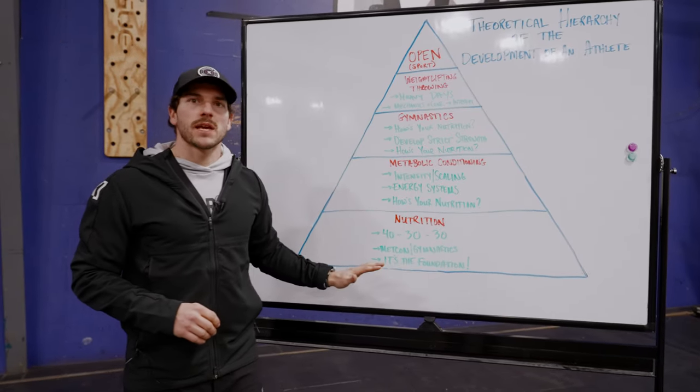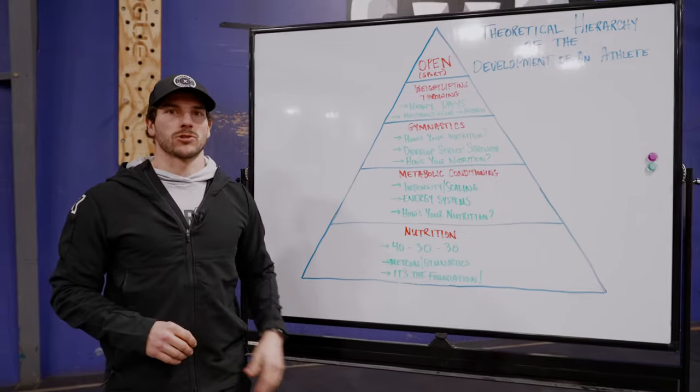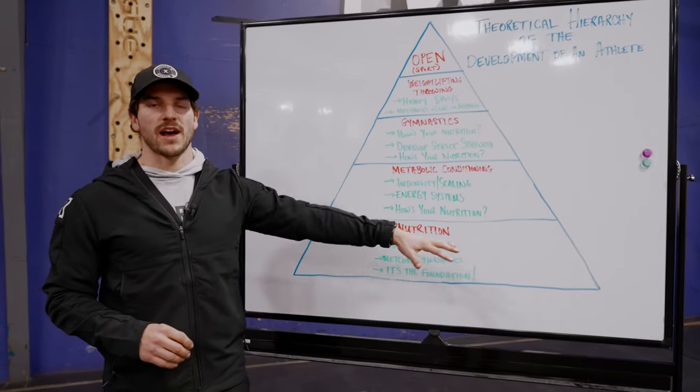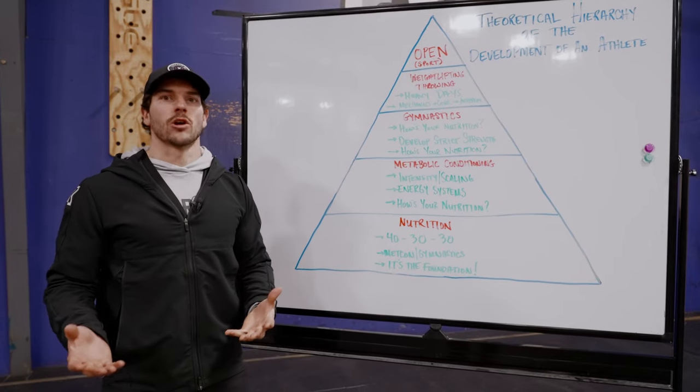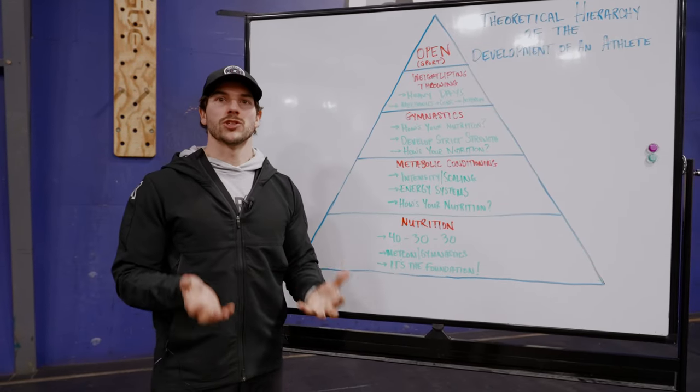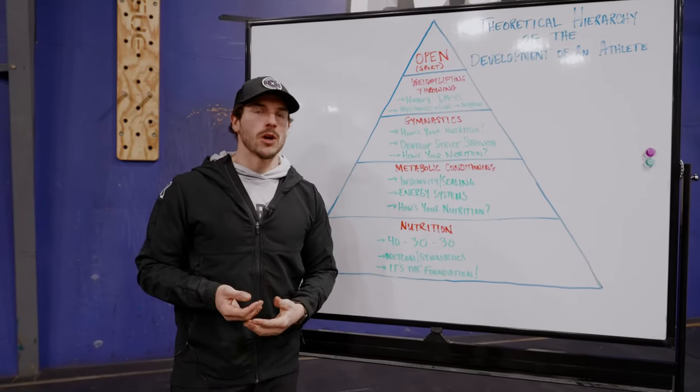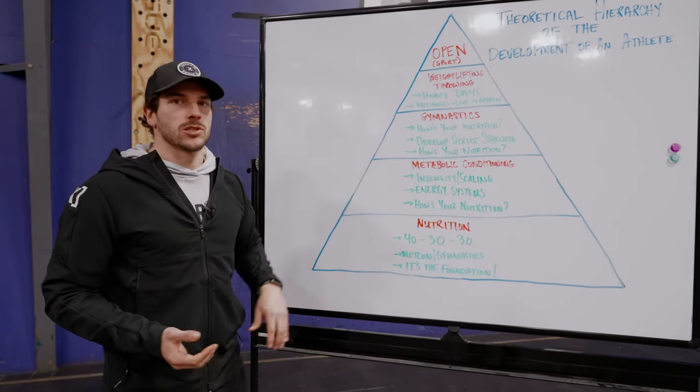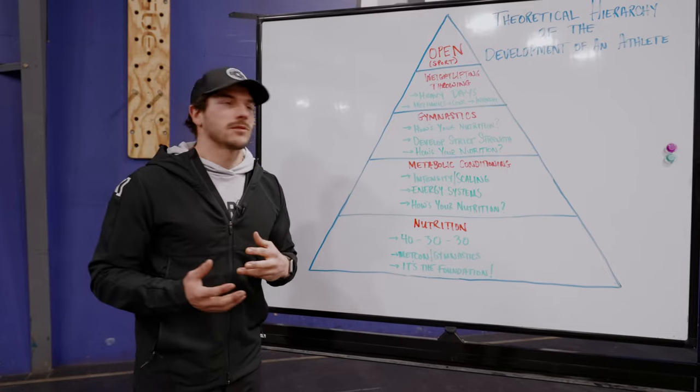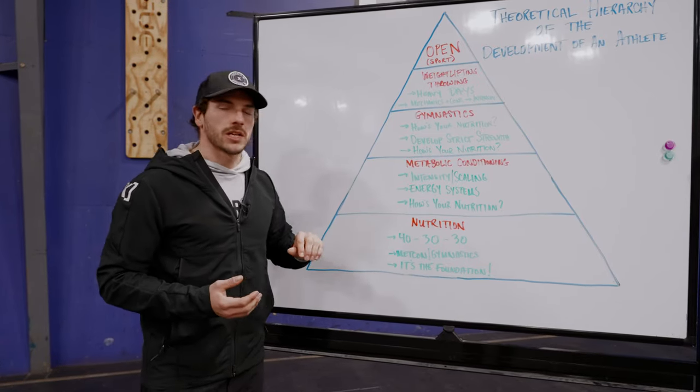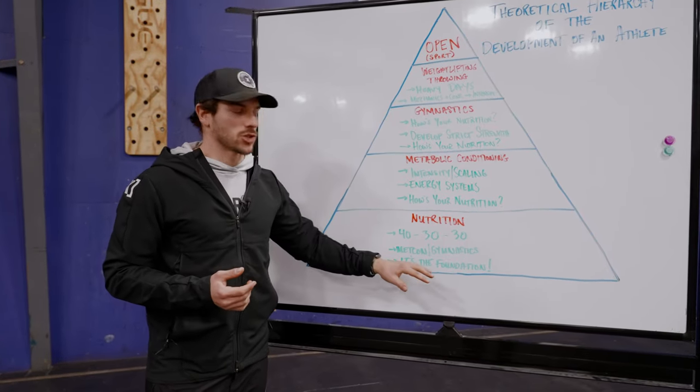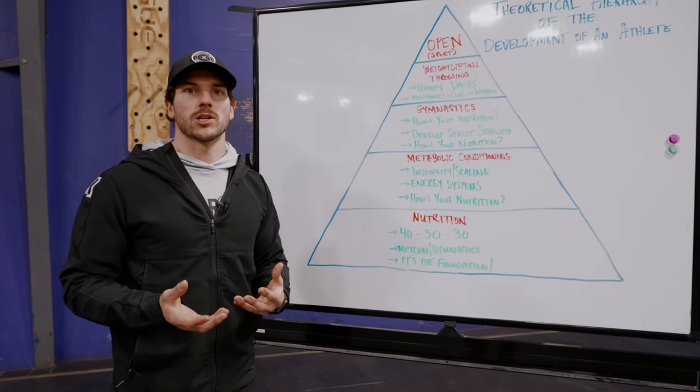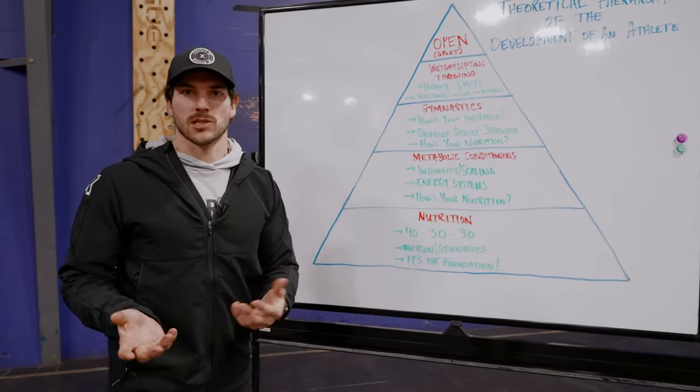High points on that is making sure using that CrossFit prescription, 40-30-30, 40% of our calories from carbohydrates, 30 from fat and protein, is a great starting point. Some athletes will need to be adjusted by their coach or a nutrition expert, but this is an excellent starting point. Basically, our metabolic conditioning and our gymnastics especially really hinge on our intake levels, making sure that it's not so much that we are in excess calorically.